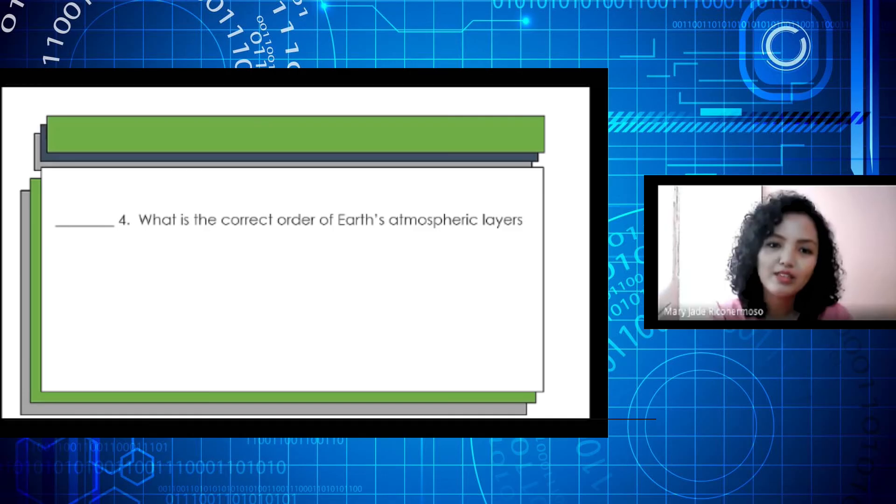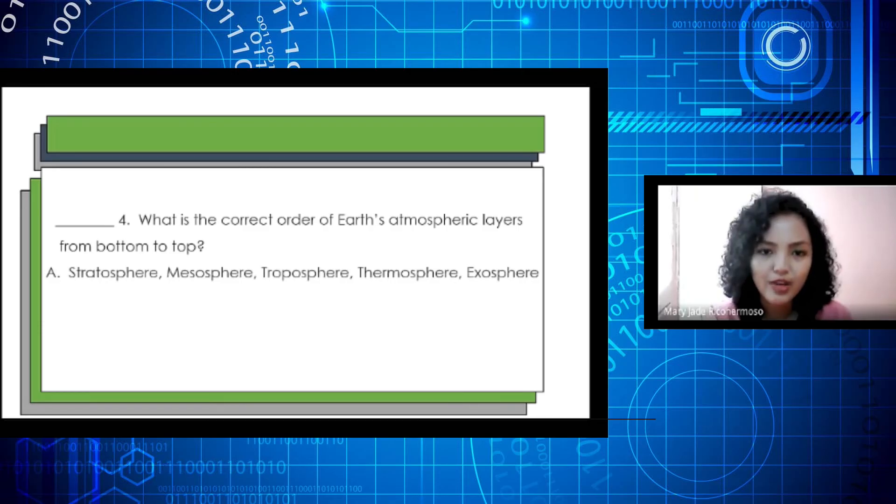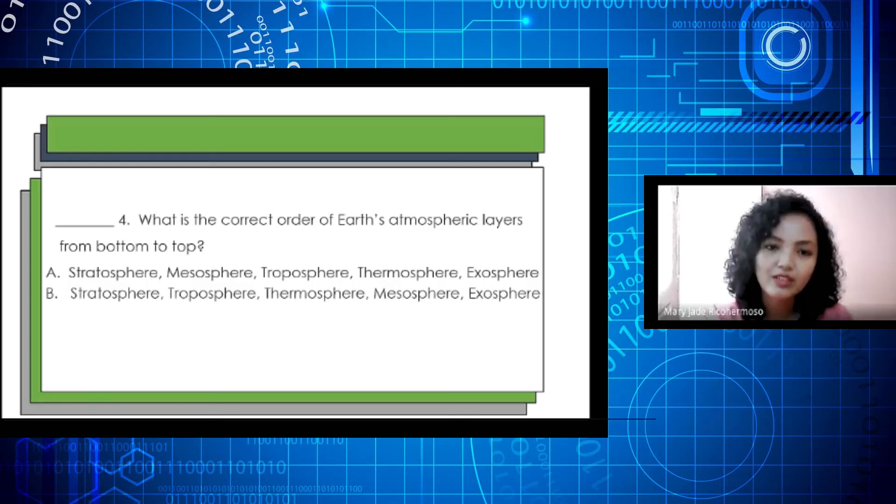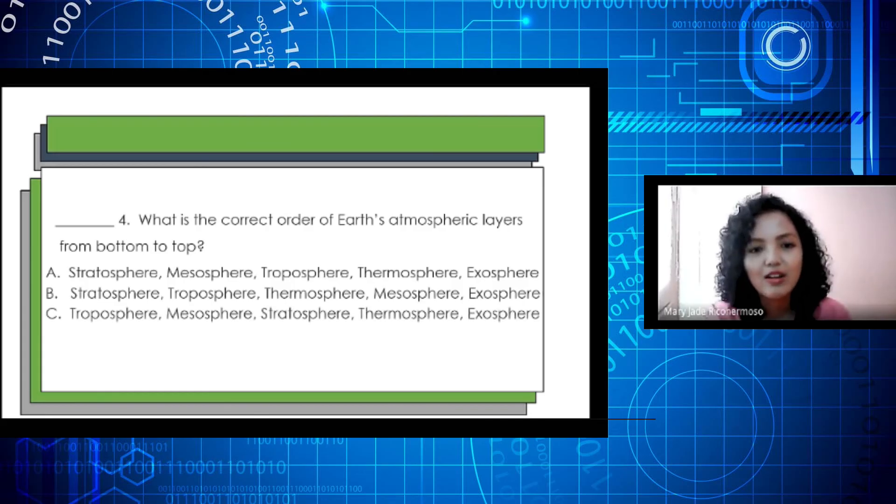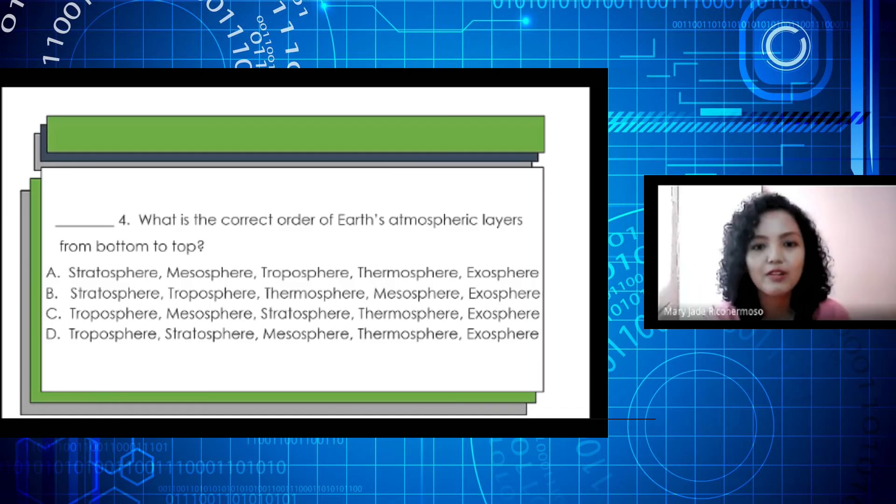Number 4. What is the correct order of Earth's atmospheric layers from bottom to top? A. Mesosphere, troposphere, thermosphere, exosphere, stratosphere. B. Stratosphere, troposphere, thermosphere, mesosphere, and exosphere. Letter C. Troposphere, mesosphere, stratosphere, thermosphere, and exosphere. And letter D. Troposphere, stratosphere, mesosphere, thermosphere, and exosphere. The correct answer is letter D. Good job!